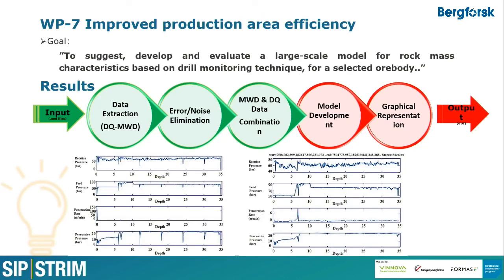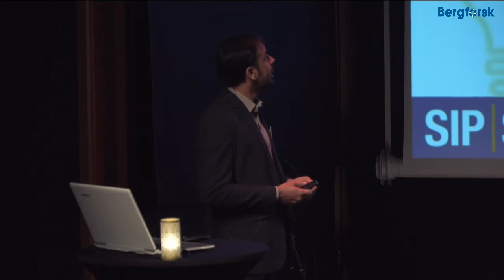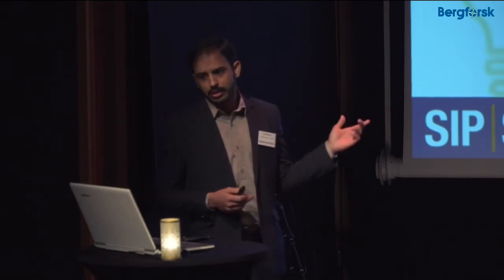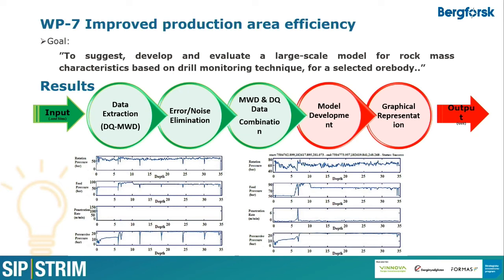Work package 7 is about improved production area efficiency. The goal is to develop and evaluate a large-scale model for rock mass characteristics based on drill monitoring data. The methodology is divided into five different steps, of which three — data extraction from XML files from the drilling equipment, noise elimination, and file combination — have been achieved so far. The next two steps are ongoing.